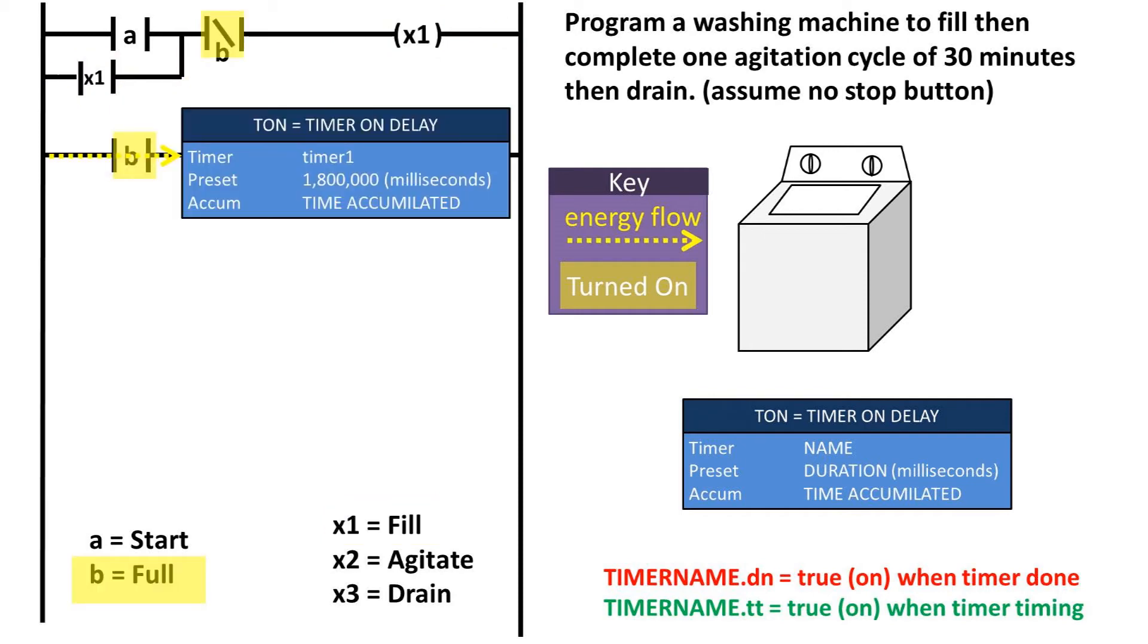Once the tank is full the full sensor will report a true or on signal which will turn off the fill loop.